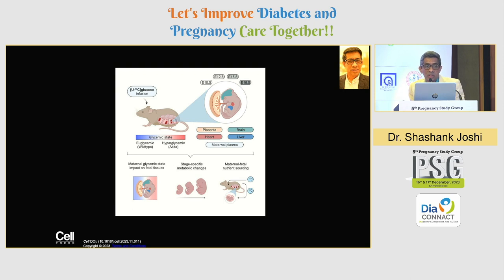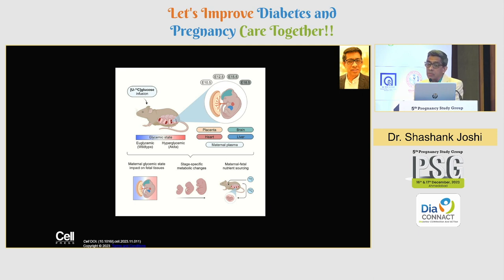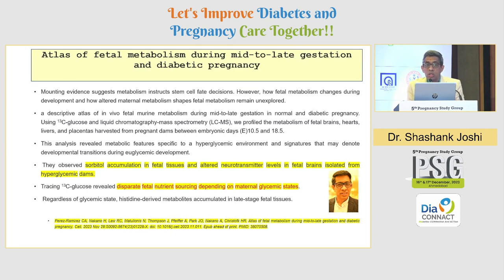The GDM models or pregnancy-and-diabetes models are based on two types of mice: the wild-type mice, which are the euglycemic mice, and the Akita mice, which are the hyperglycemic mice. Just as we study insulin resistance with euglycemic clamps and hyperglycemic clamps, here we study euglycemic wild-type mice and hyperglycemic Akita mice. We look at their impact on the brain, liver, placenta, and heart of the fetal tissue, as well as the maternal plasma.